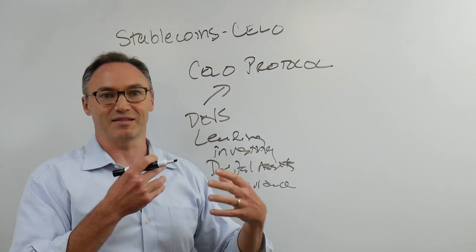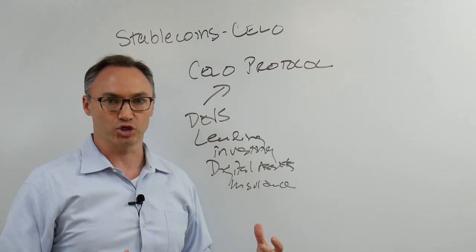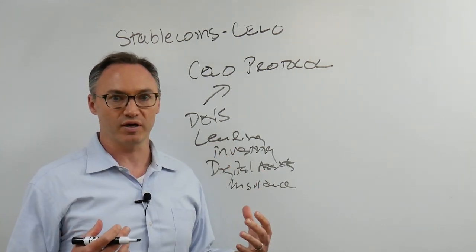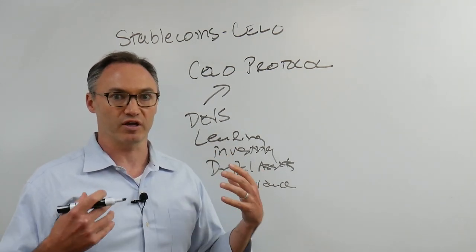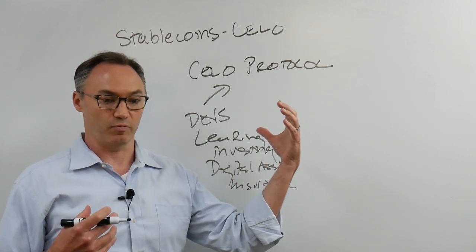Since they built it to be lightweight on phones and based on mobile networks, we can create this worldwide blockchain-based network where people can send money, use money, lend, borrow, invest, insure - all those things we take for granted in the traditional financial world, using the Celo backbone.